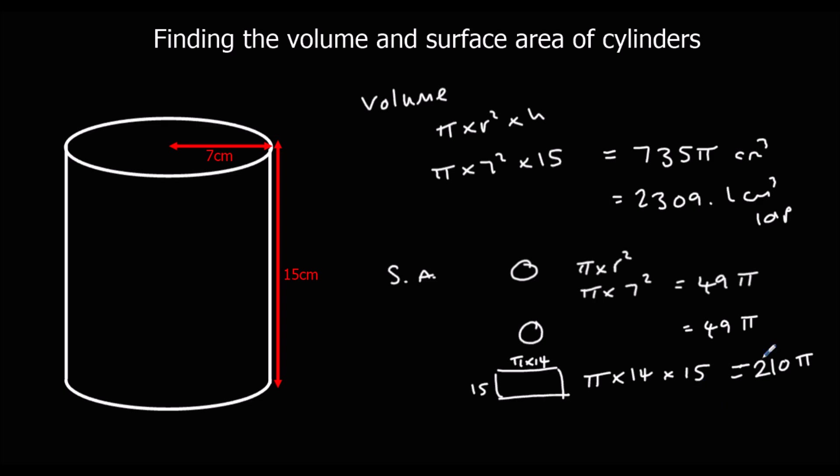So we've got 49 plus 49 plus 210, which is 308 pi centimeters squared, or as a decimal that's 967.6 centimeters squared to 1 decimal place.